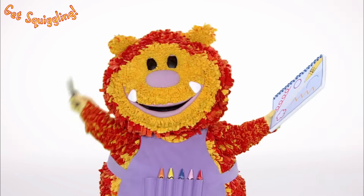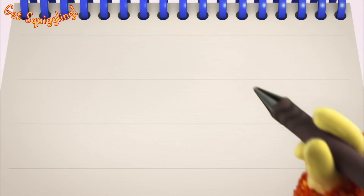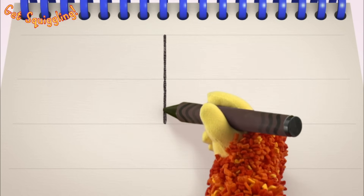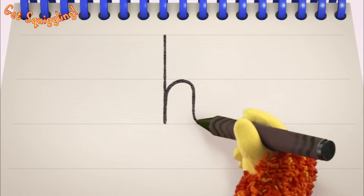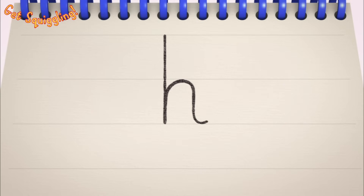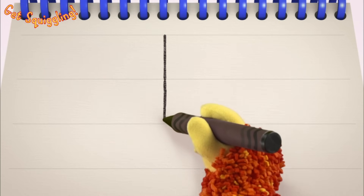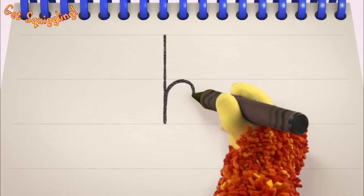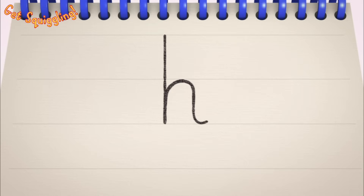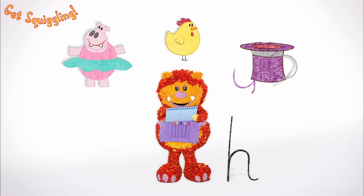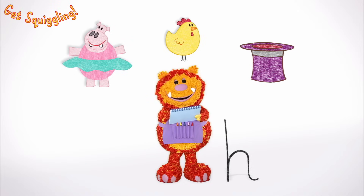Have you got your squiggle pads and squiggle sticks ready? Let's get squiggling! Holding your squiggle stick like this, move it down, up a bit, over, down and flick — the letter H! Let's squiggle it again: go down, up a bit, over, down and flick — the letter H! Shall we squiggle some things that start with the letter H? A hippo, a hen and a hat — they all begin with the letter H.